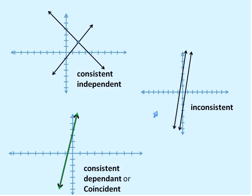The inconsistent is the system that never crosses. It never has a solution. They are parallel lines. They do not cross each other. They have the same slope, and they are inconsistent. So those are the three major types of systems of linear equations.